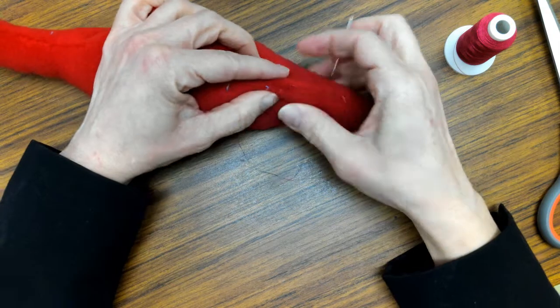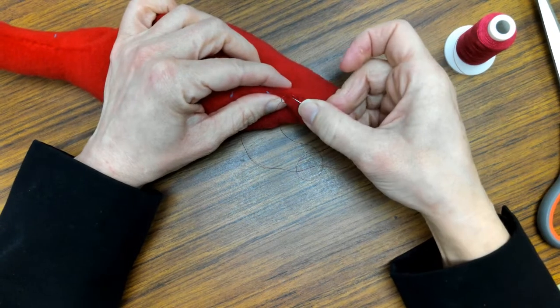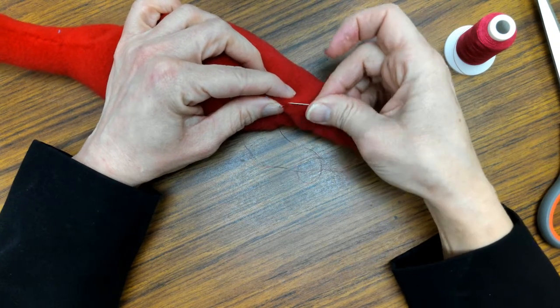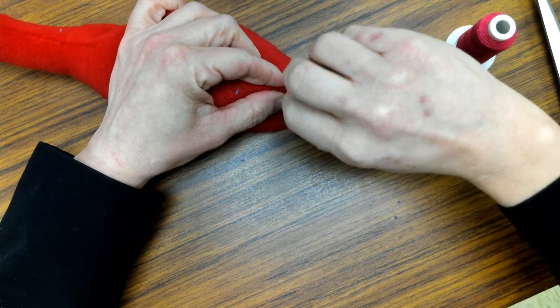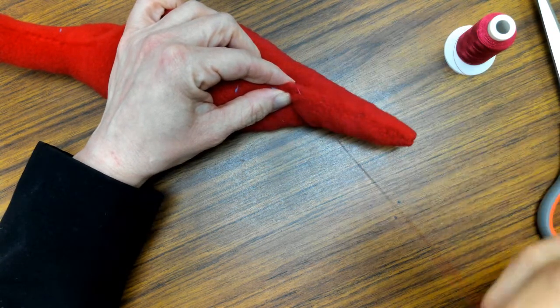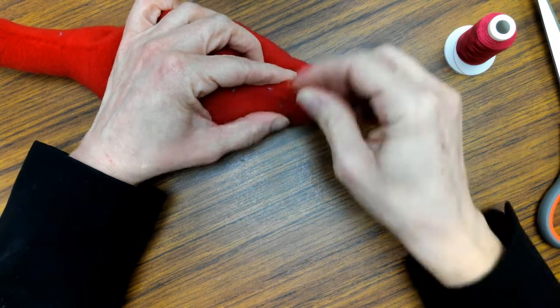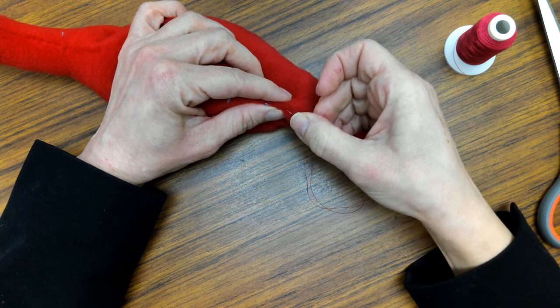So as close as I can to the inside of this seam, I'm just going to make a little stitch. In and out. And then I'm going to go through this loop. How many times do you think I'm going to do it? I'm going to do it three times. One.